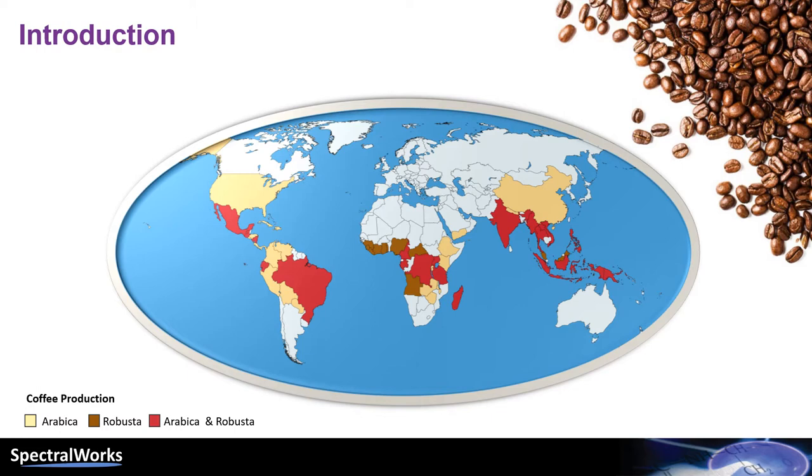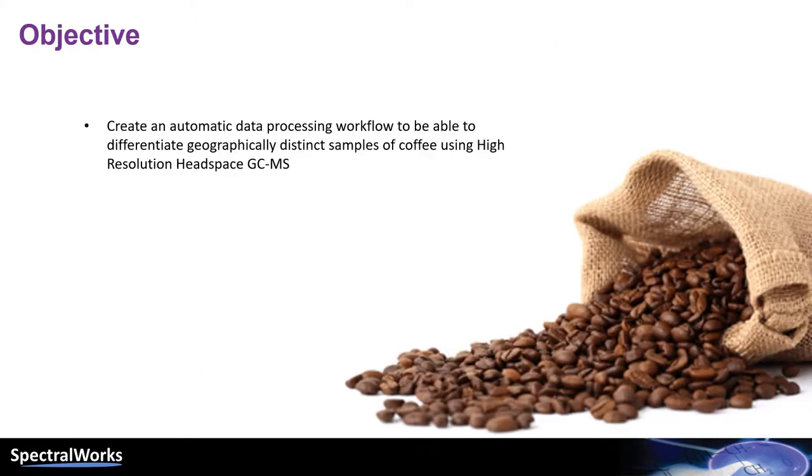For example, Robusta is a more robust bean. It also matures faster than the Arabica, therefore it is cheaper. The purpose of this talk is to present our data processing workflow to objectively see if there is a measurable difference between coffee samples from different geographical locations.